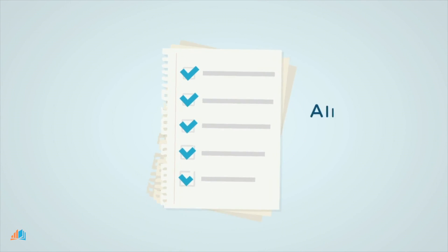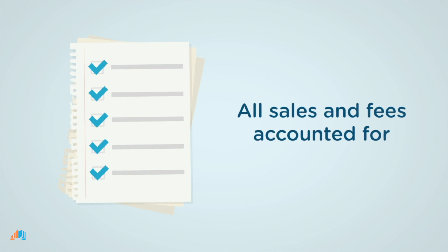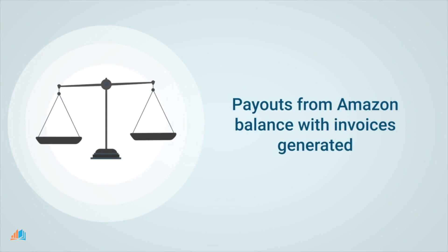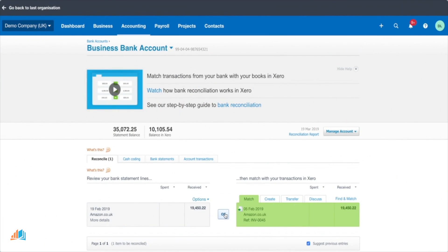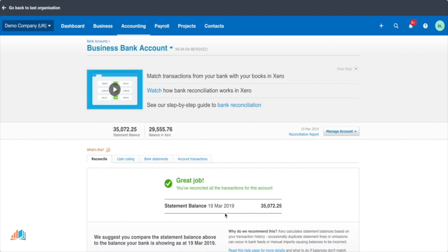These invoices account for all the sales and fees from each of your Amazon payouts, meaning if you received a payout of £15,000 from Amazon, you'll find a summary invoice in Link My Books for £15,000 too. This means reconciling your payments from Amazon now just takes a few minutes each month.